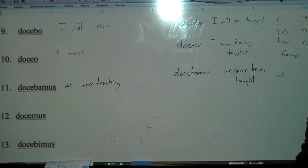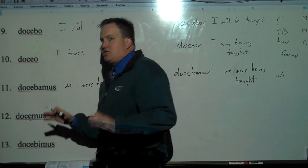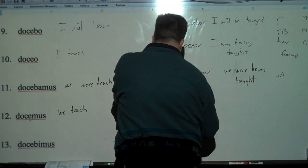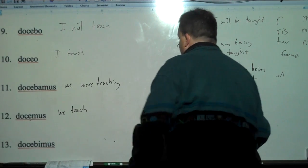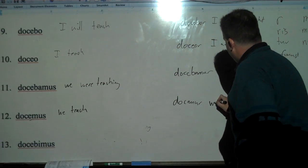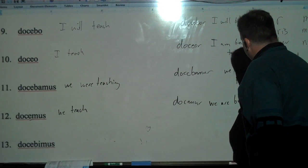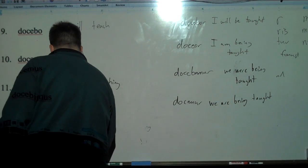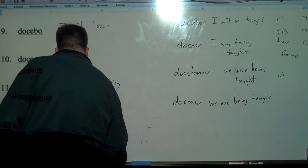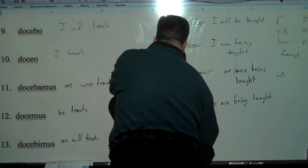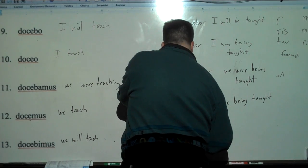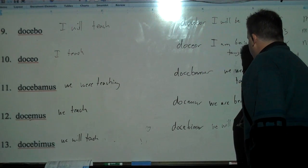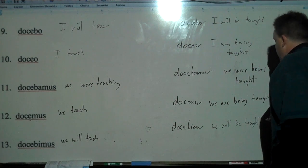Dokemus. Present tense. Now it's an E here because it's second conjugation. So that's we teach. And then take the mus off. Dokemor. We are being taught. And then dokebimus. The B-I makes it future. So that's we will teach. And then dokebimor. We will be taught.